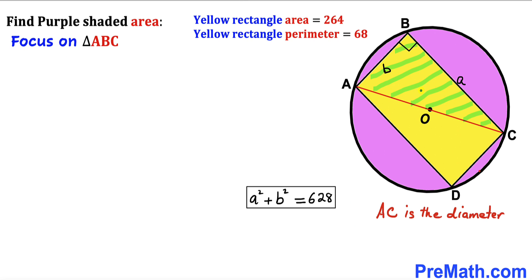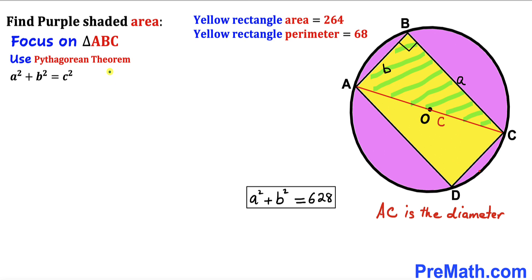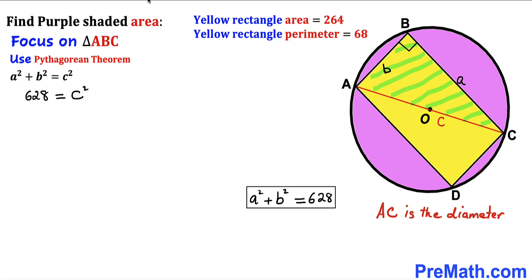Now let's focus on right triangle ABC whose legs have side lengths a and b. We'll apply the Pythagorean theorem: a² plus b² equals c², where c is the longest side — the diagonal AC. We know a² plus b² equals 628, so c² equals 628. Taking the square root of both sides, c equals the square root of 628.